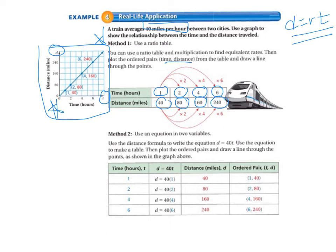Method two is use an equation in two variables. Use the distance formula to write the equation d equals 40, because 40 is our rate, times t. Use the equation to make a table. Then plot the ordered pairs and draw a line through the points, as shown in the graph above. So it's the same graph. We end up with the same graph, no matter which way we do this.